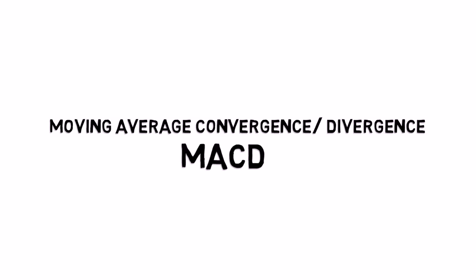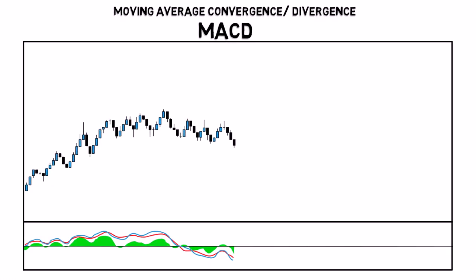Moving Average Convergence Divergence, or MACD, is a momentum indicator that shows the relationship between the difference between two moving averages. It is used to identify new trends and finding entries for your trades.